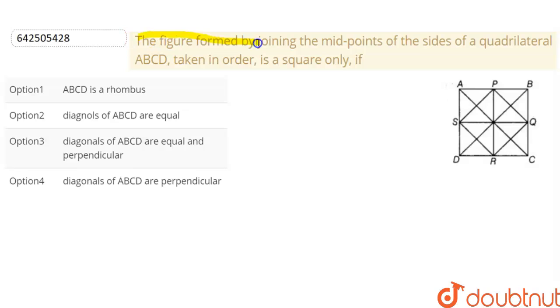The figure formed by joining the midpoints of sides of a quadrilateral ABCD taken in order is a square only if we have been given that PQRS is a square. Hence, PQ will be equal to QR will be equal to RS will be equal to SP.